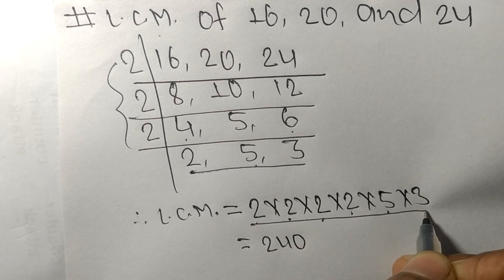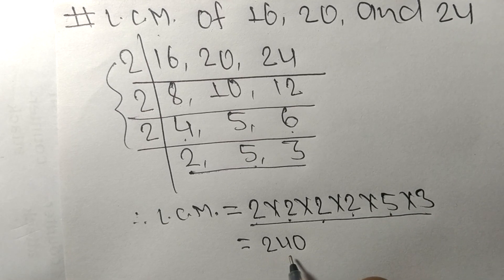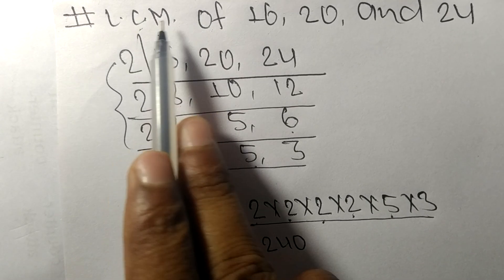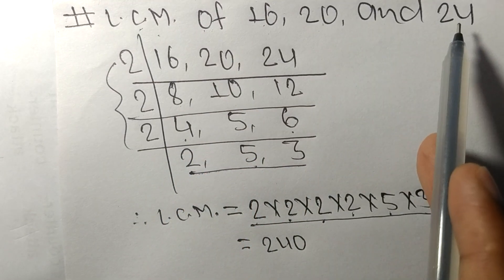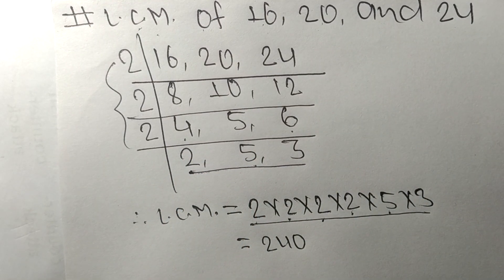By multiplying all these numbers, we get 240. Therefore, 240 is the LCM of 16, 20, and 24. That's all for today, thanks for watching.